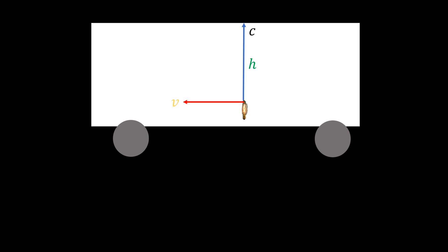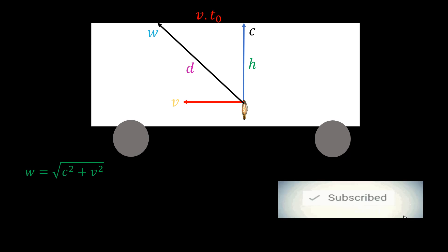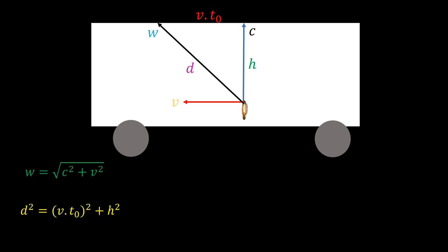The case where the light is affected by the bus. In this second case, we assume that the bus increases the speed of the light such that it travels the inclined path as seen by the observer outside. Therefore, the inclined speed w is equal to the square root of c squared plus v squared. The inclined distance d is the same as we derived earlier. So, the time it takes to traverse the inclined path is given by the distance over the speed as follows.